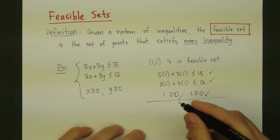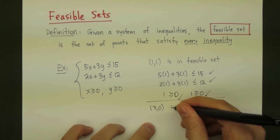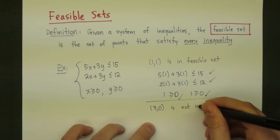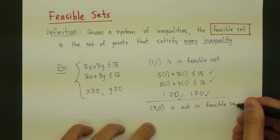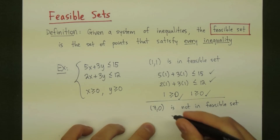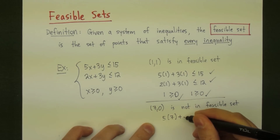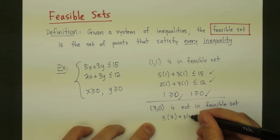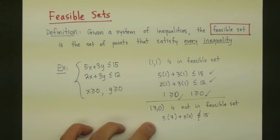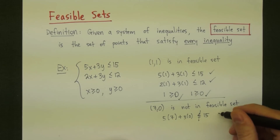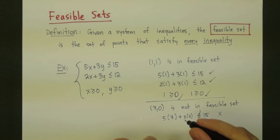Now let's look at a point that's not in the feasible set — the point (7, 0), with x equals 7 and y equals 0. This point is not going to be in the feasible set. If we check it in the first inequality, we have 5 times 7 plus 3 times 0, which equals 35, and 35 is not less than or equal to 15. So because it fails this one inequality, it's not in the feasible set.